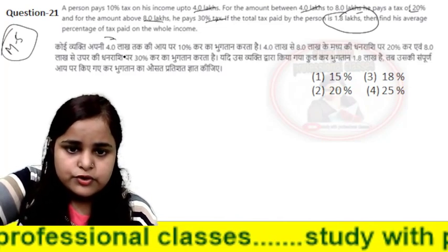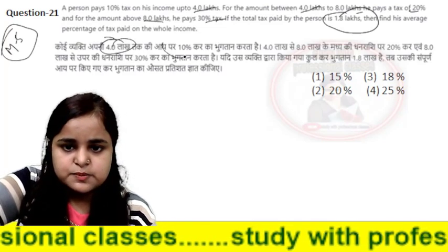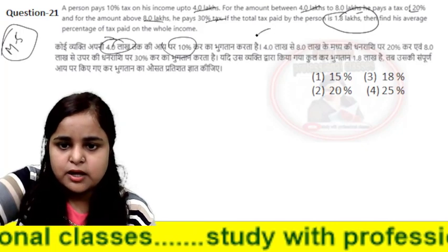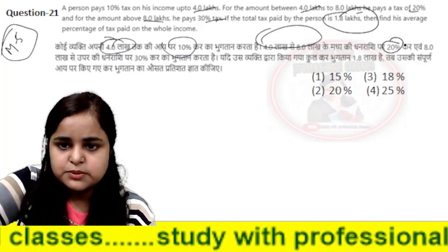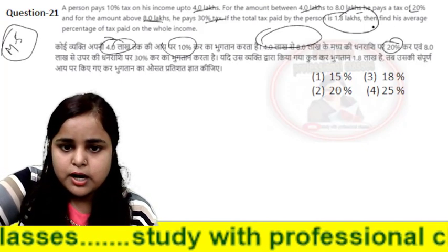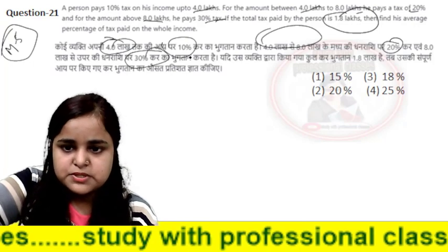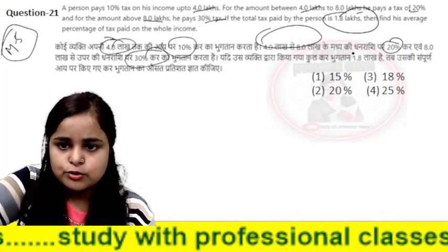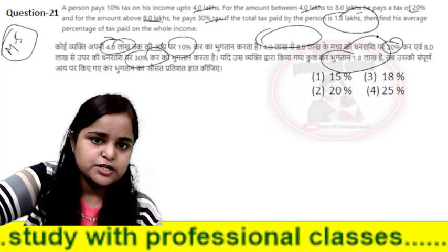So, if a person pays on 4 lakhs at 10%, from 4 lakhs to 8 lakhs he pays 20%, above 8 lakhs he pays 30%, and total tax paid is 1.8 lakhs.